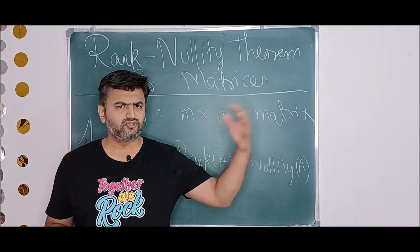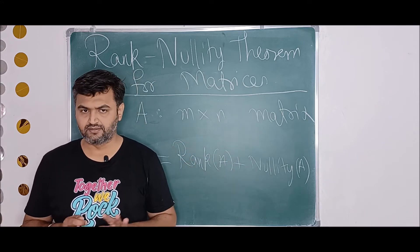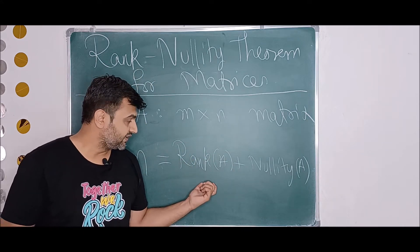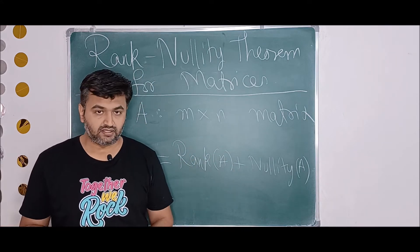How do you find the rank? You simply do row operations to reduce the matrix into row echelon form or reduced echelon form. In that form you count the number of nonzero rows, and that is the rank of the matrix. You can also use column operations.